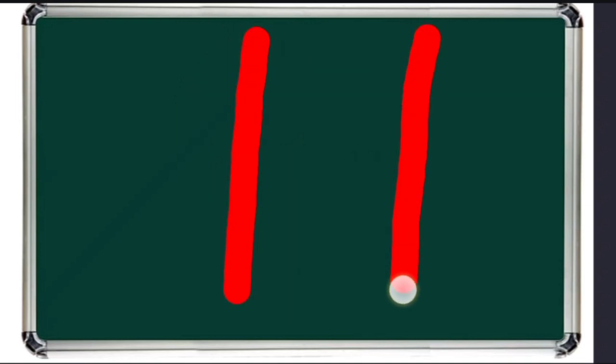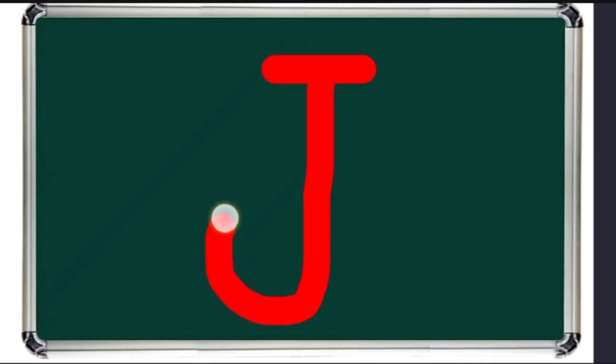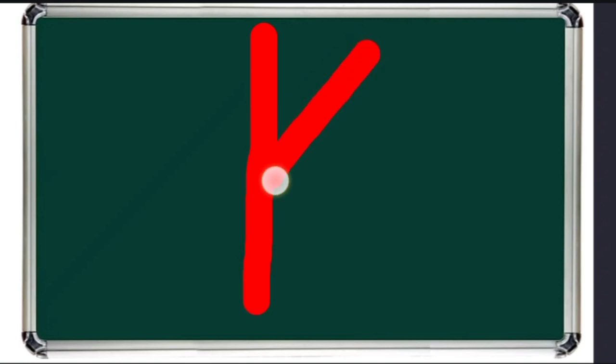H. H for hen. I. I for ice cream. J. J for jug. K. K for kite.